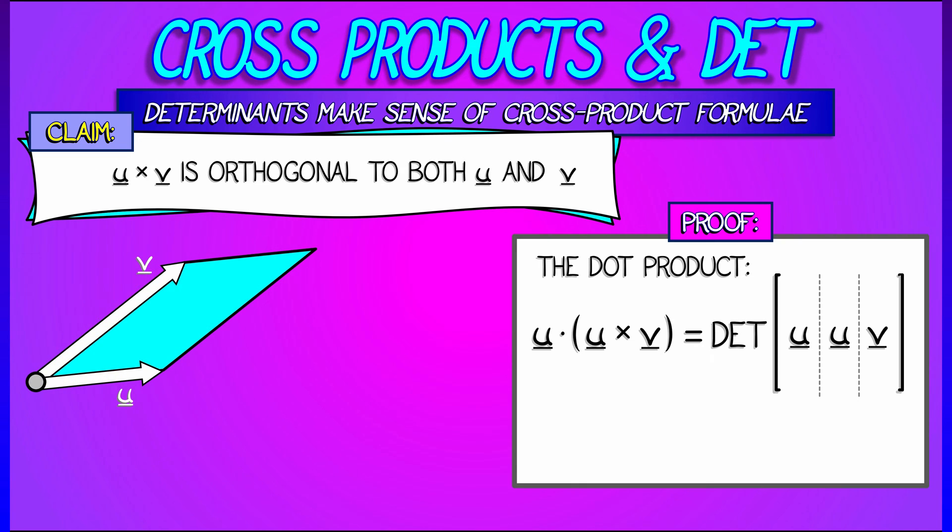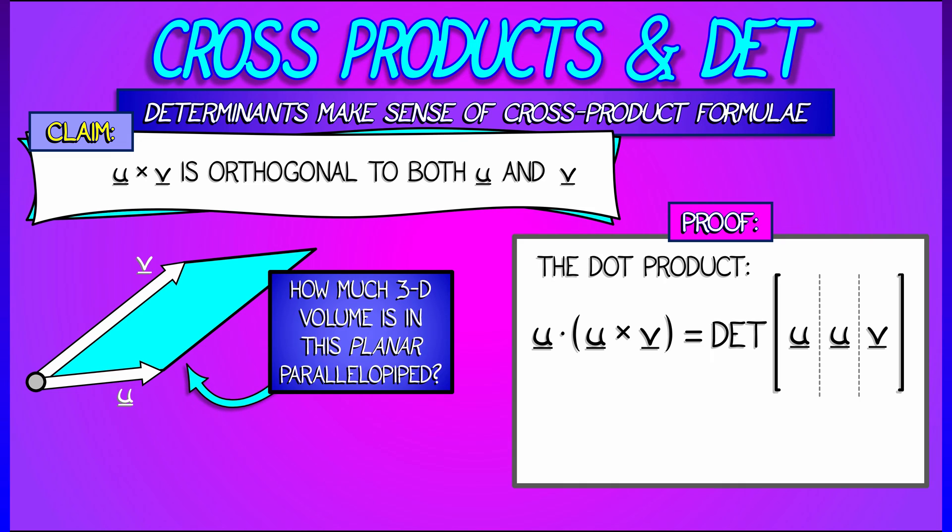And now I'm going to interpret this in terms of a volume of a parallelepiped spanned by those three vectors. How much three-dimensional volume is spanned by u and u and v? Well, that's flat. There's none more flat.